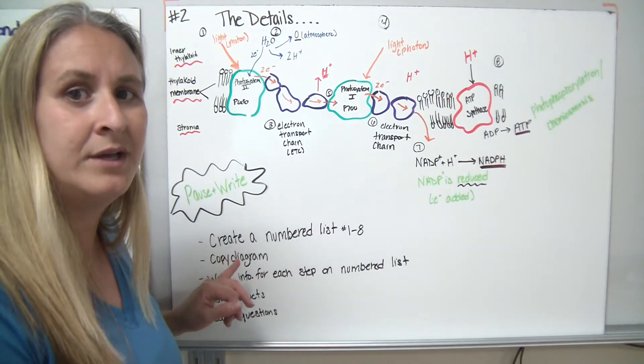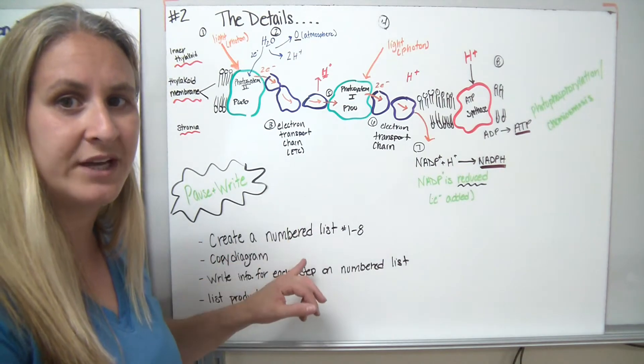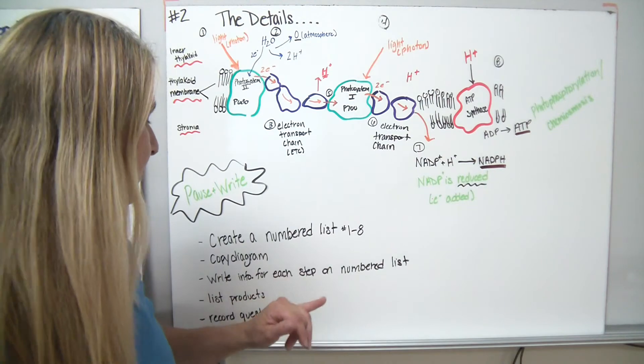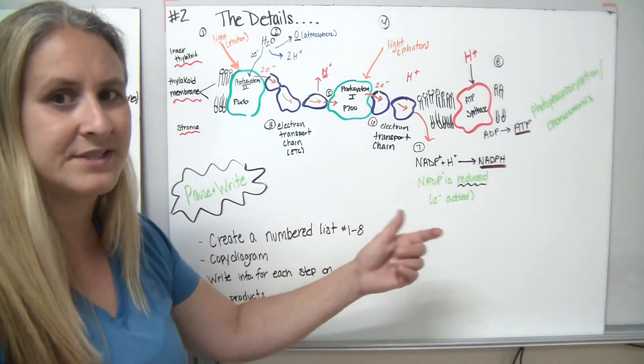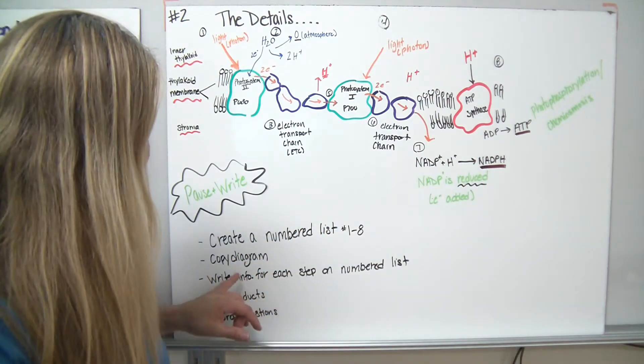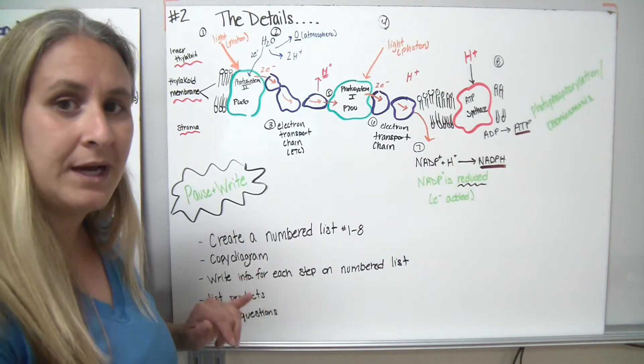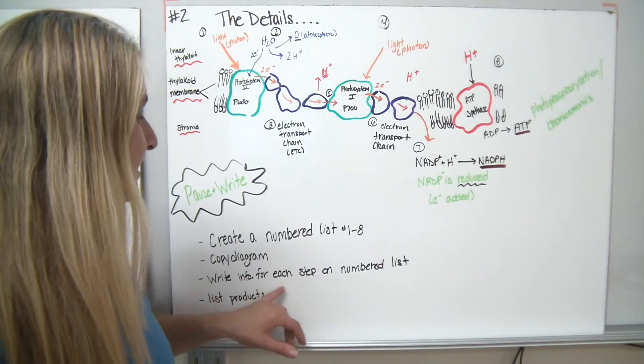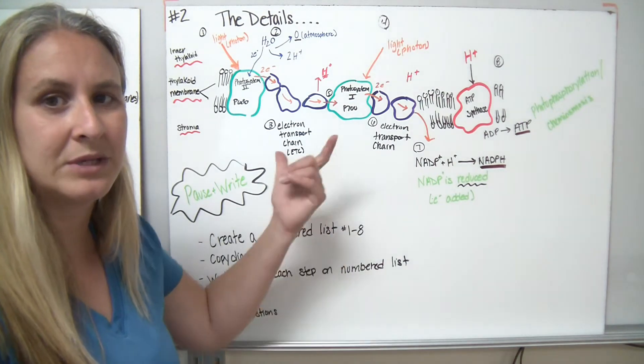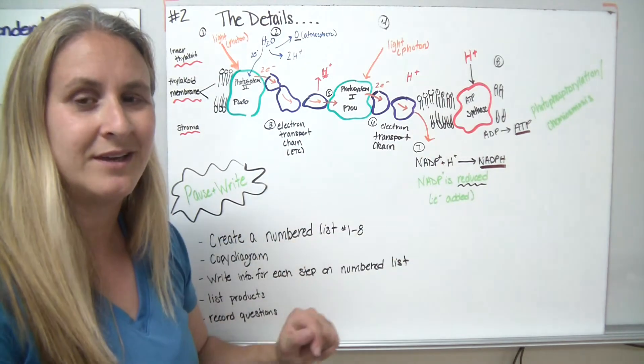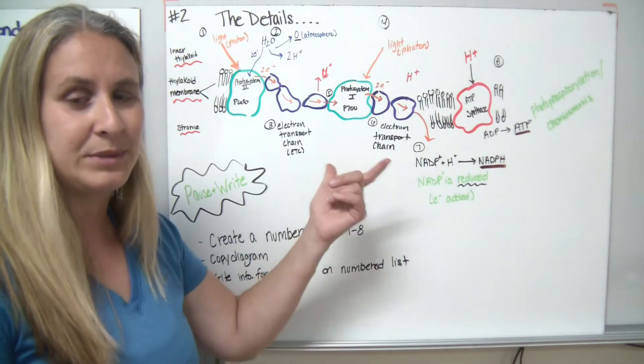When you write down, I want you to, below the diagram, create a numbered list, numbered one through eight, in order to list what's happening in each of those eight steps. Copy the diagram down. Write the information for each step on the numbered list once you actually get it all written down and play the video.